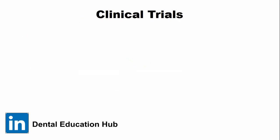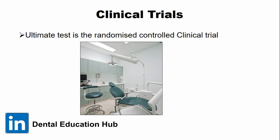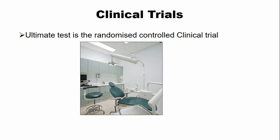After the laboratory evaluation, the next step is the clinical trials. The laboratory tests provide useful data, and after a material passes through the laboratory evaluation, the next step is the clinical trial. The ultimate test is the randomized control trials, and these trials are mostly conducted in cooperation with a university or hospital before the final release of the material for clinical use or general practice.